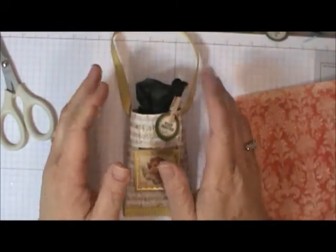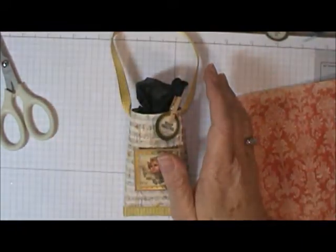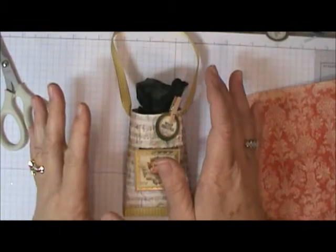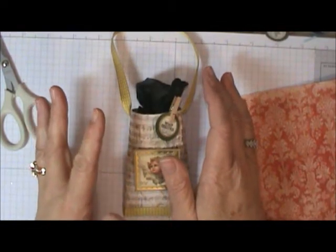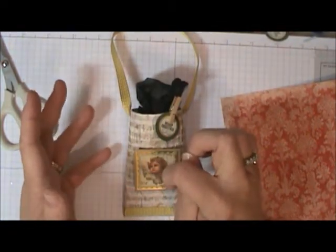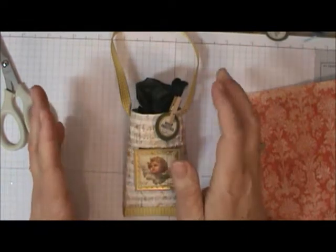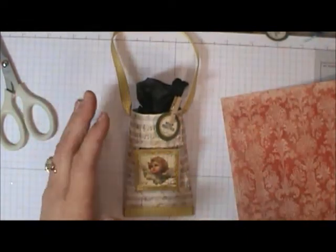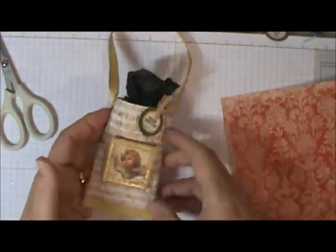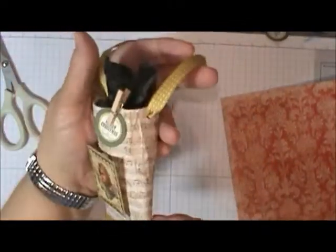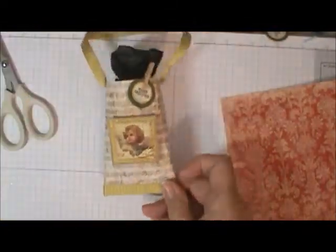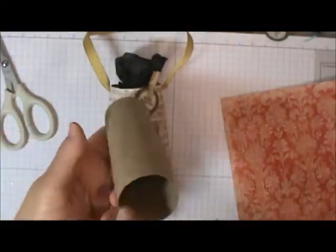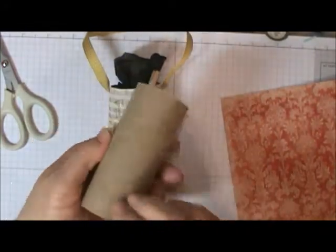Today we're going to make a fun little upcycled project that is again handy for little gifts, little takeaways from party favors, for the table settings if you're hosting a dinner, different things like that. And this is what we're making today, a little treat tube and if you haven't already guessed, this is made from the humble toilet paper tube.